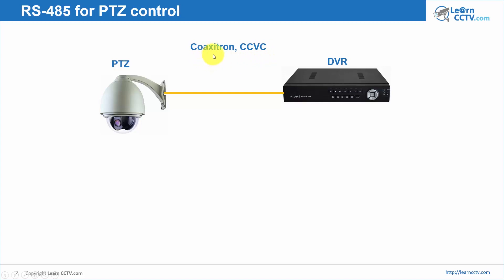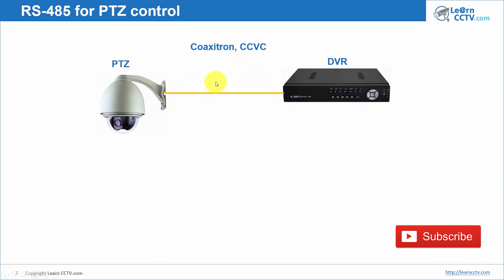I'm not talking about coaxitron control or CCVC control. Coaxitron is a Pelco control — you can send commands using the coaxial cable. I'm not talking about this. CCVC is a Samsung protocol that allows you to send commands through the video cable to control your camera. Let's say you don't have coaxitron and you don't have CCVC — let's run extra cable to control your PTZ.